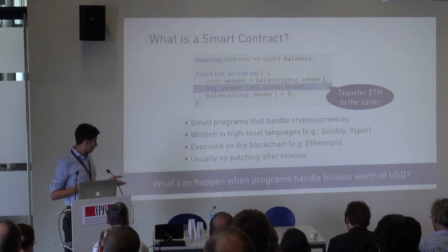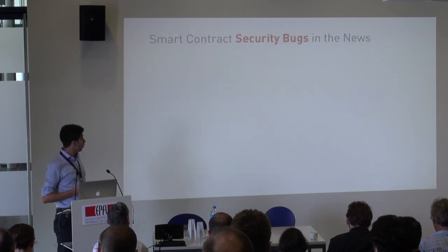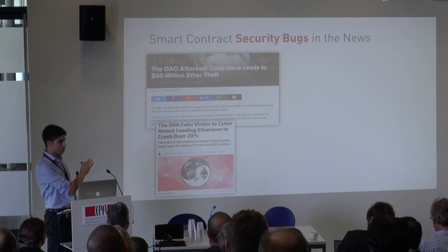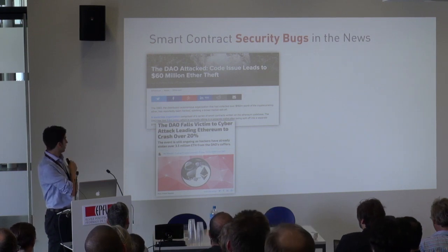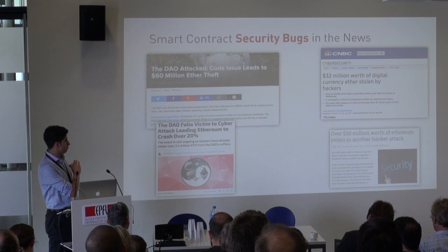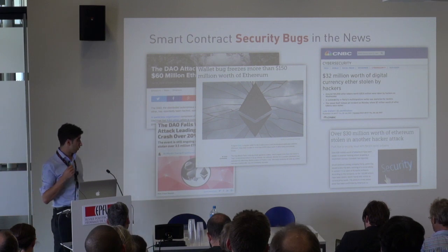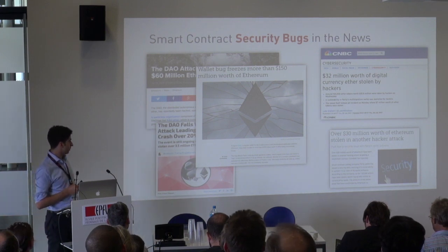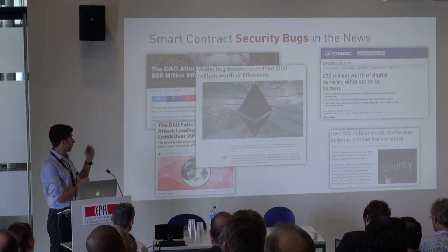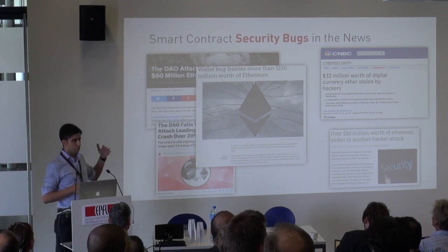If you have programs that handle billions of dollars worth of value, what can go wrong? A lot of things. The first famous bug was the DAO bug in June of last year. Last year also saw two consecutive bugs in a very popular wallet library that caused significant losses — the second bug actually froze money, and that money is still frozen. We're talking about 150 million dollars' worth being frozen and unusable.